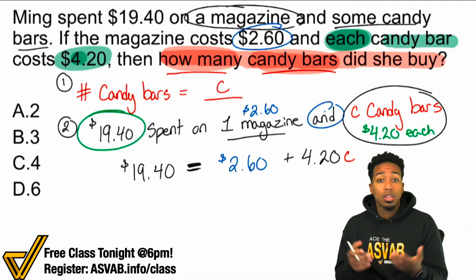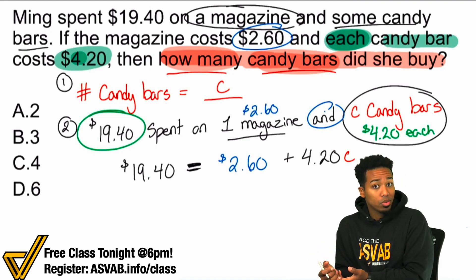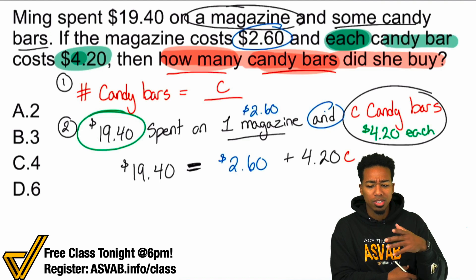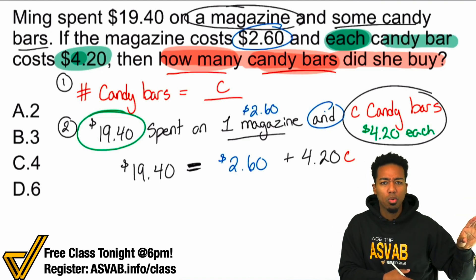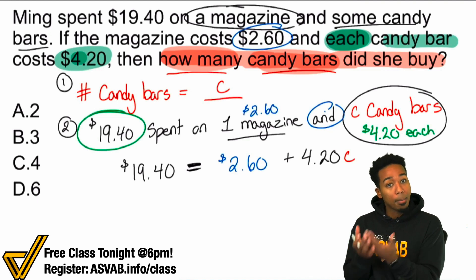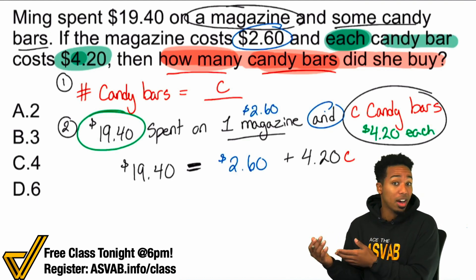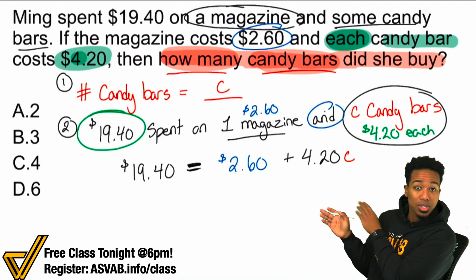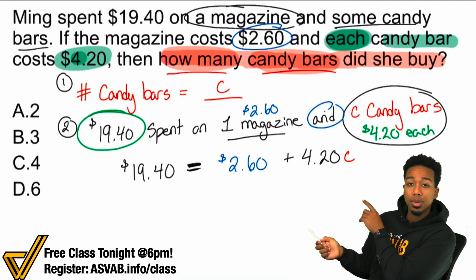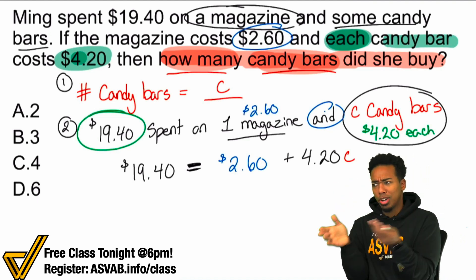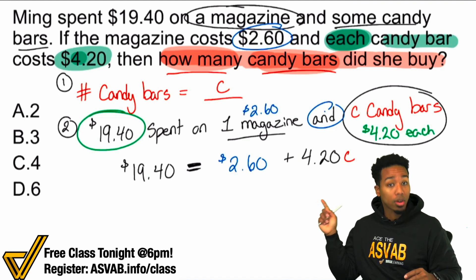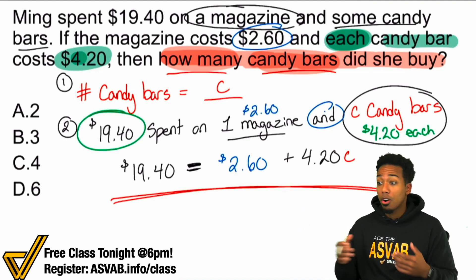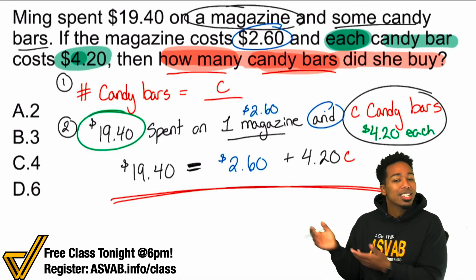Another way to approach this would be: if you want to know how many candy bars you purchased, figure out how much you spent on just the candy bars. Take out the magazine — subtract $2.60 from $19.40 — and what's left is the amount spent only on candy bars. Then divide to get the answer. I'm going to do it in the form of setting up an equation because this is an absolutely necessary skill. Not every problem is pretty enough to just subtract and divide — you've got to be ready for more complicated problems. All equations are is math sentences representing the situation.